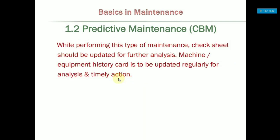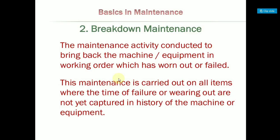In predictive or condition-based maintenance, you monitor equipment using check sheet data and equipment condition data. For breakdown maintenance, suppose a machine is running and there is a sensor failure or a cage failure — that constitutes a breakdown situation.